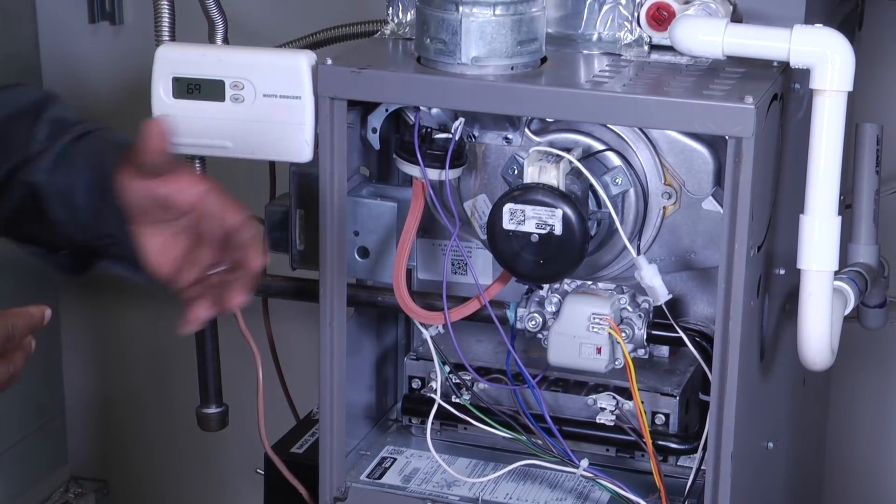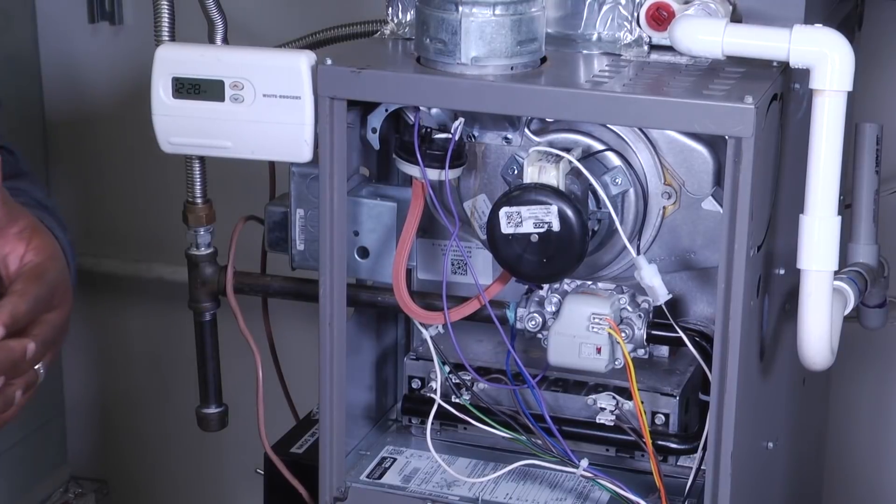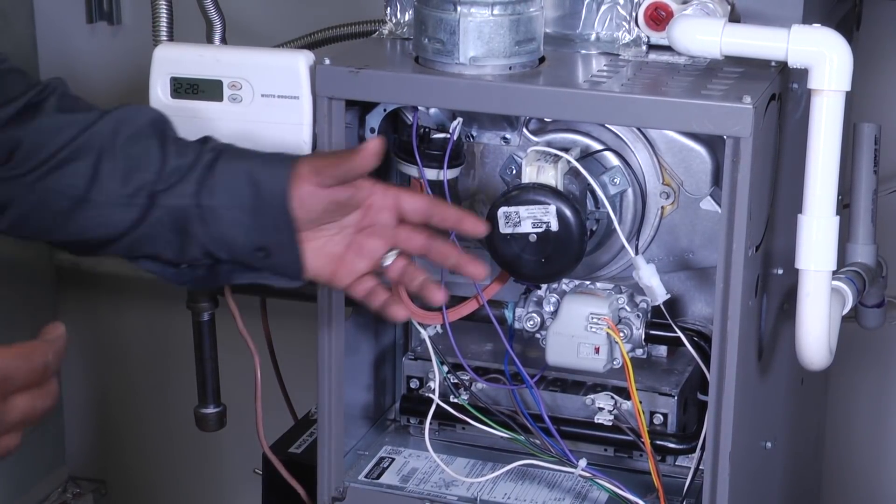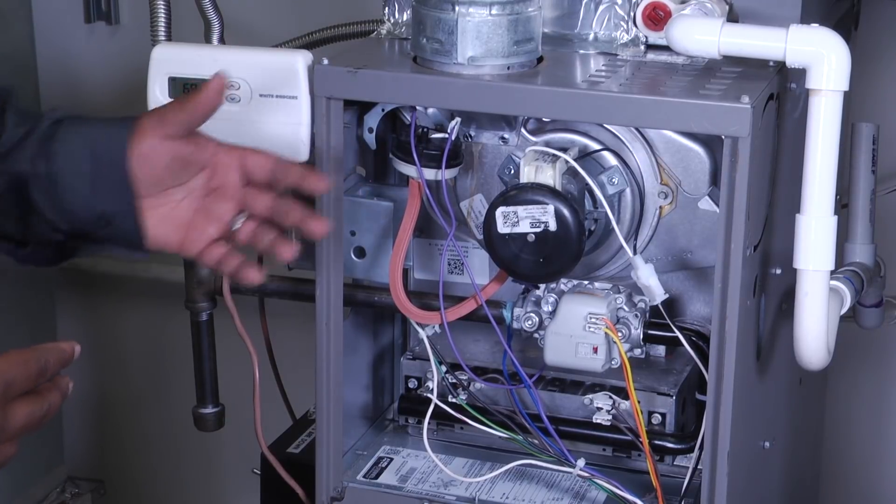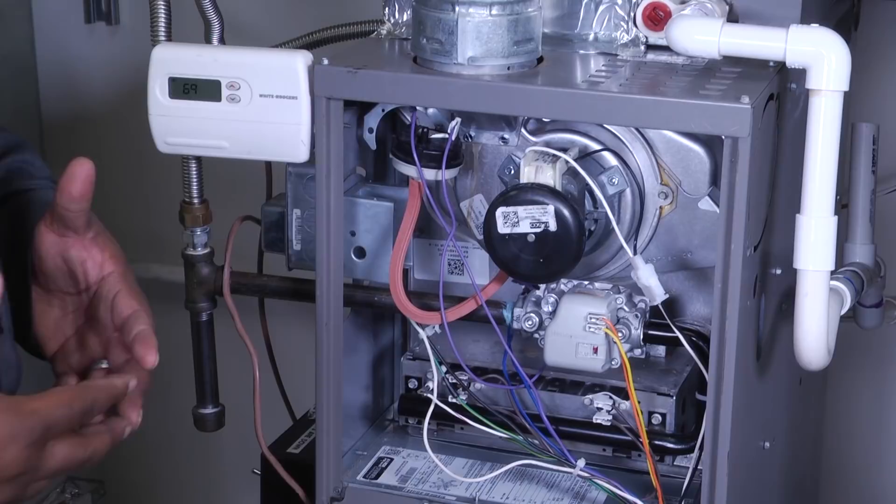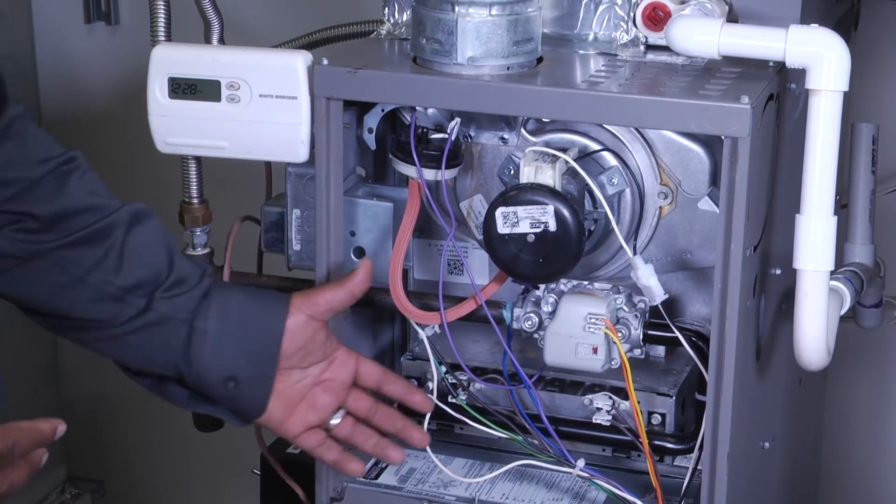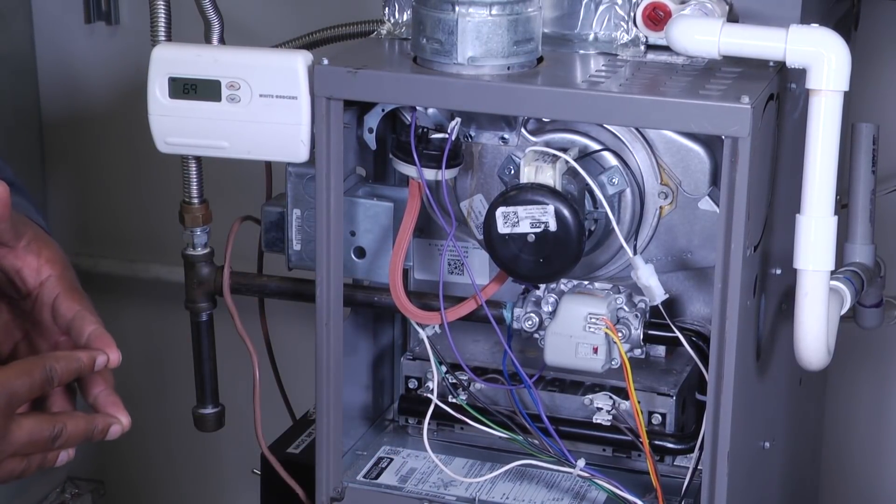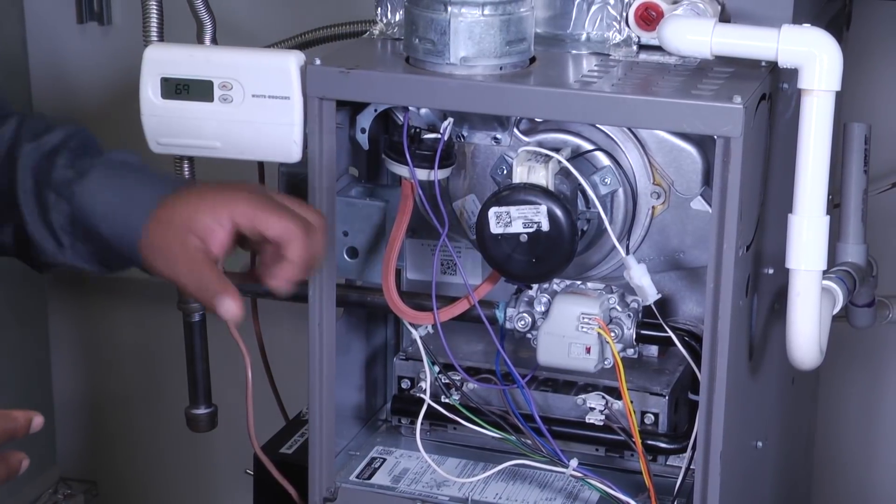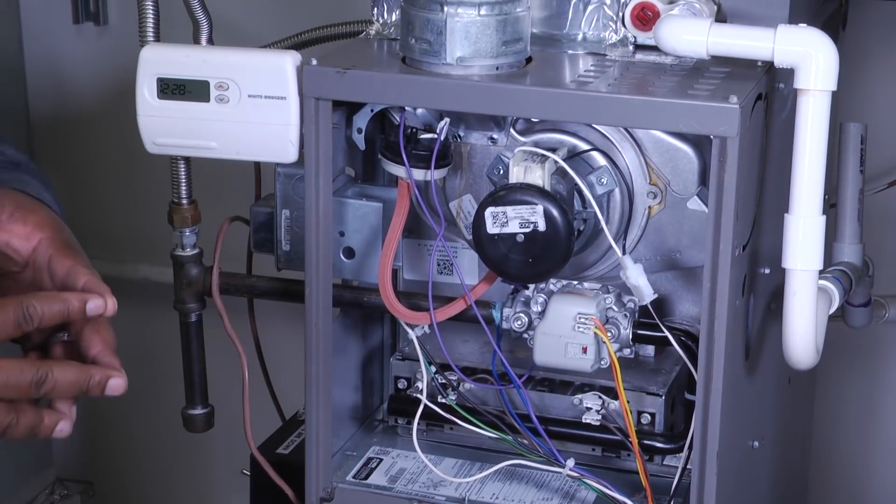The next thing that'll happen is our inducer draft motor will begin to spin to cause a draft. Shortly after, the inducer draft motor pressure switch is going to prove that our inducer fan motor is working. Shortly after that, we'll see a glow from our hot surface igniter. After that, the gas valve will open and then we'll hear that foosh and get that flame.